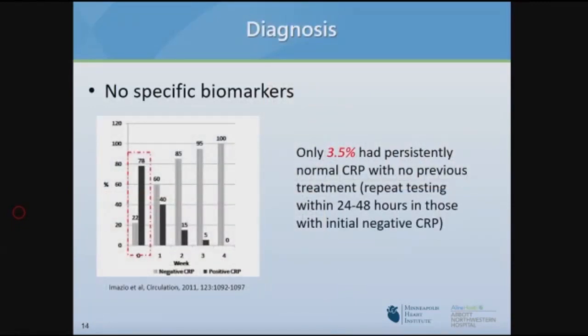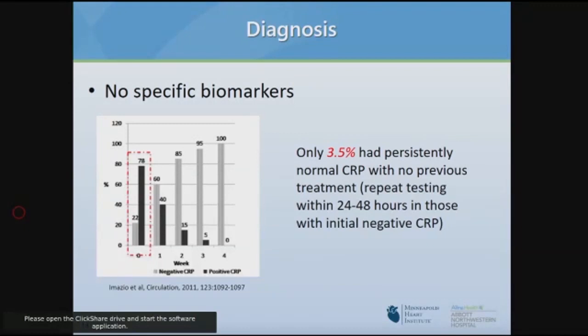There is no biomarker specific for pericarditis itself. As an inflammatory condition, CRP and ESR have been studied. In patients presenting within the first 48 hours without anti-inflammatories, about 80 percent will have elevated markers. If CRP is checked twice and anti-inflammatories have not been given, less than five percent of patients with pericarditis will have a normal CRP. So a normal CRP makes pericarditis unlikely, though this is fundamentally a clinical diagnosis.